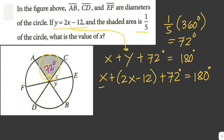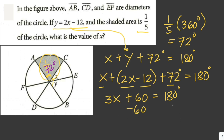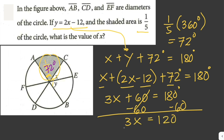We group like terms: x plus 2x equals 3x, and negative 12 with 72 gives 60. So we have 3x plus 60 equals 180 degrees. We subtract 60 from both sides to get 3x equals 120, then divide both sides by 3. Therefore the value of x is just equal to 40 degrees.